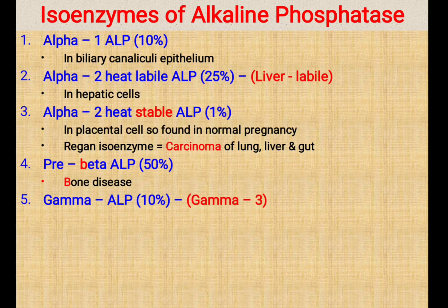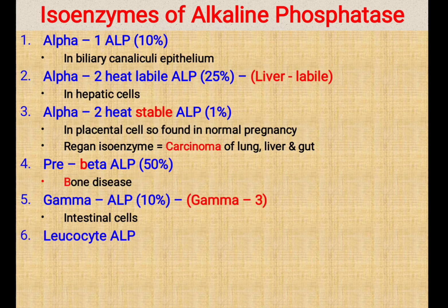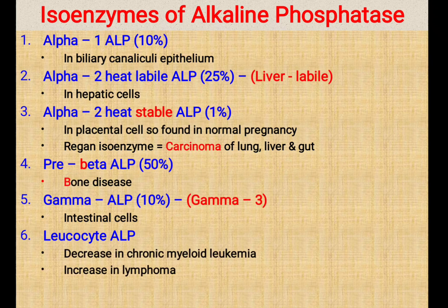Apart from biliary system, hepatic cells, placenta, and bone, there is also gamma ALP, which is about 10% of the total alkaline phosphatase and is produced by the intestinal cells. Lastly, alkaline phosphatase is also produced by leukocytes — leukocyte ALP — which is about 4 to 5% of the total alkaline phosphatase. Leukocyte ALP is decreased in CML (chronic myeloid leukemia) and is found to be elevated in lymphoma.